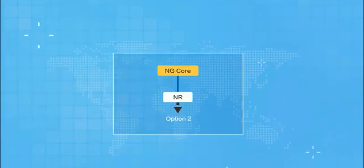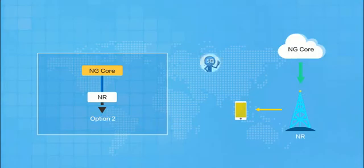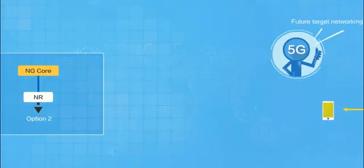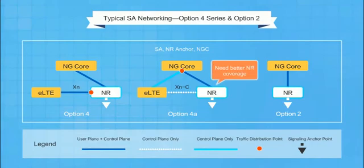Option 2 mode is extremely simple: the core network is an NGC and only NR is available on the wireless side. This is the ultimate goal for the 5G networks of the future. In all three SA networking schemes, the signalling plane is anchored on the NR side, so SA networking requires better NR coverage.